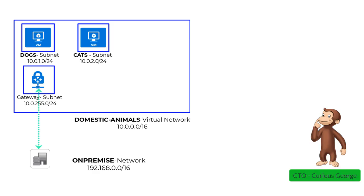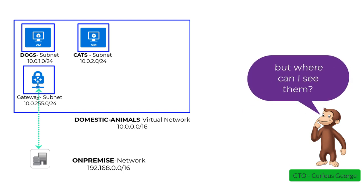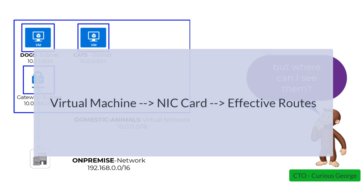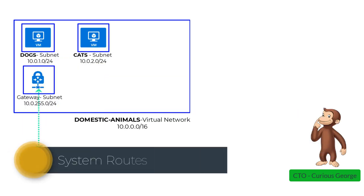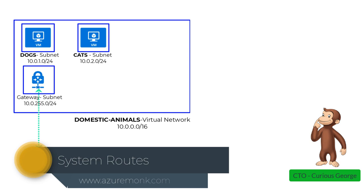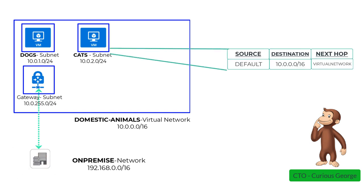Going back to George's question, by default, even without us doing anything, Azure automatically creates certain routes and associates them to every resource inside of a virtual network. We can see this by clicking on a VM, then choosing the network interface card associated to it, and then clicking on effective routes. These routes which are automatically created are called system routes because you don't have to create them manually. In this example, we see that the address range of the virtual network, 10.0.0.0/16, has a route with a next hop of virtual network, meaning Azure uses its automatic routes to route between resources inside a virtual network. The source here means how or who created these routes — in this case it's default, so Azure created it on your behalf.